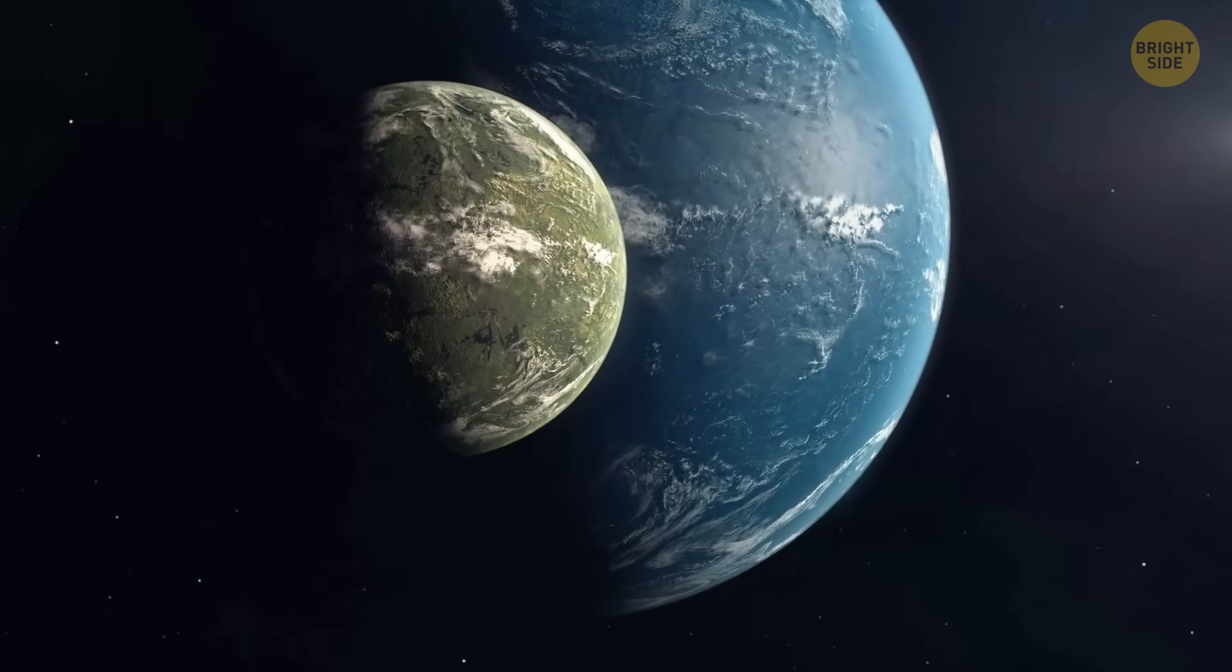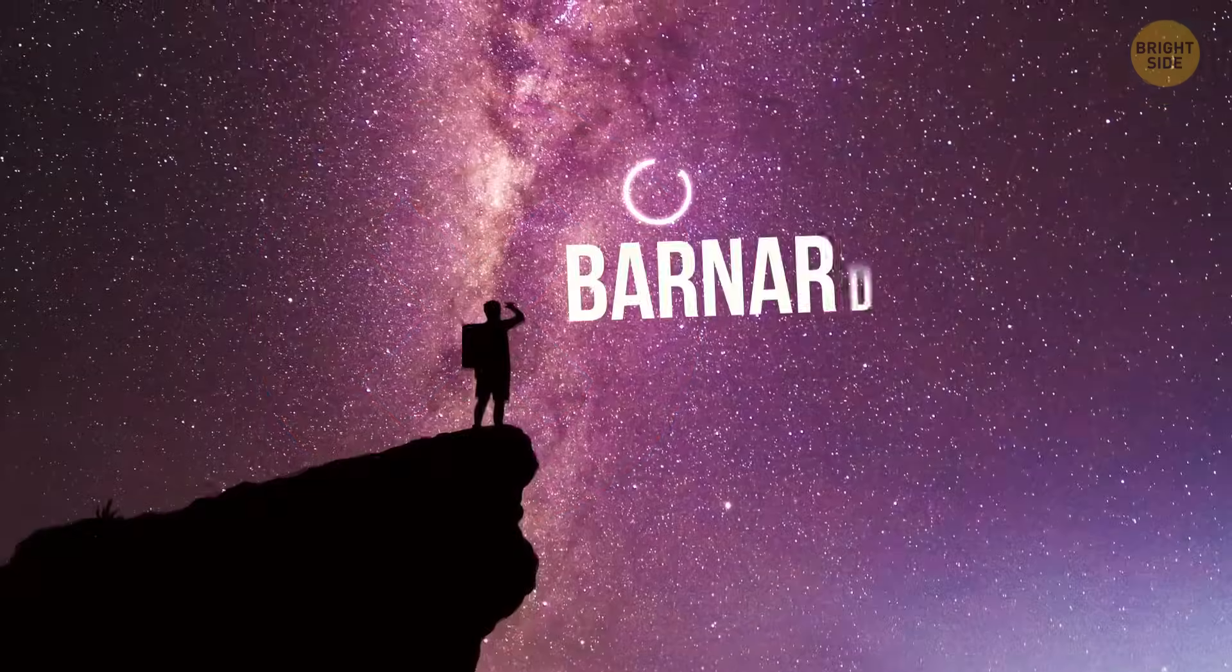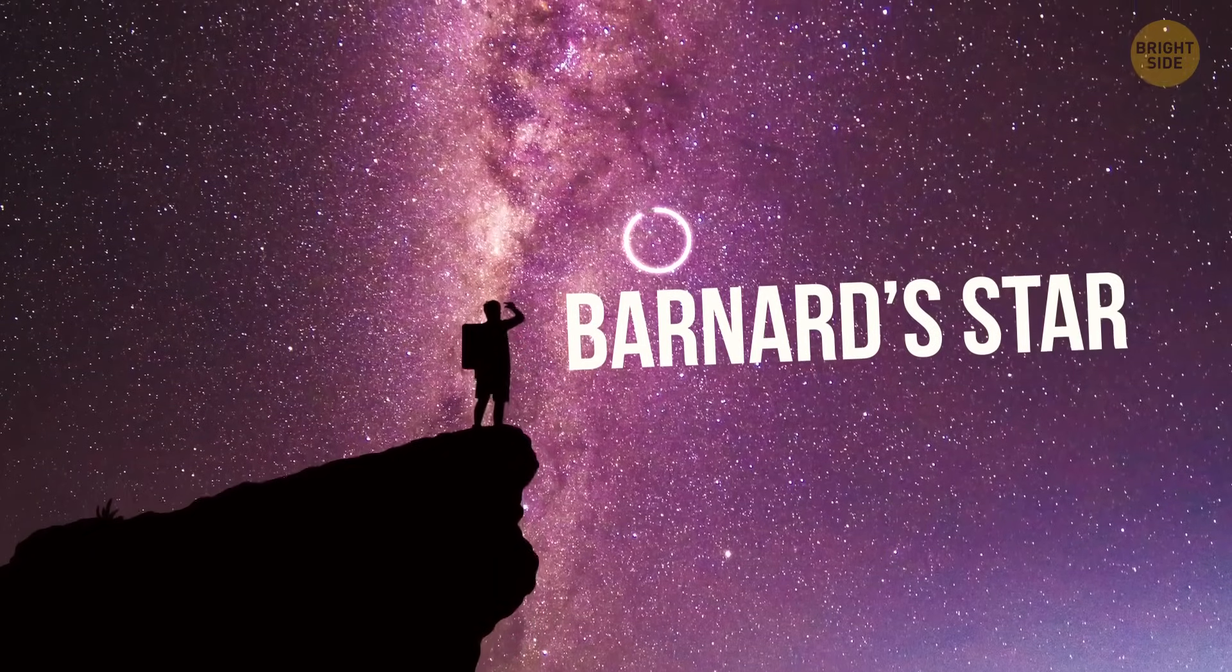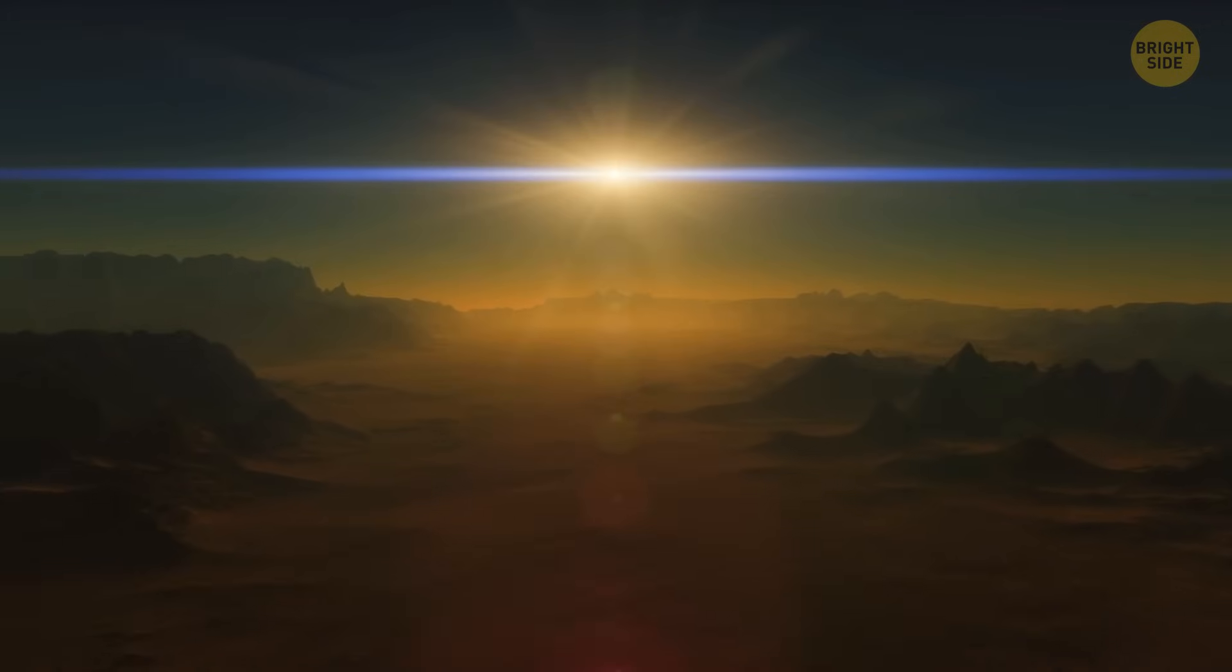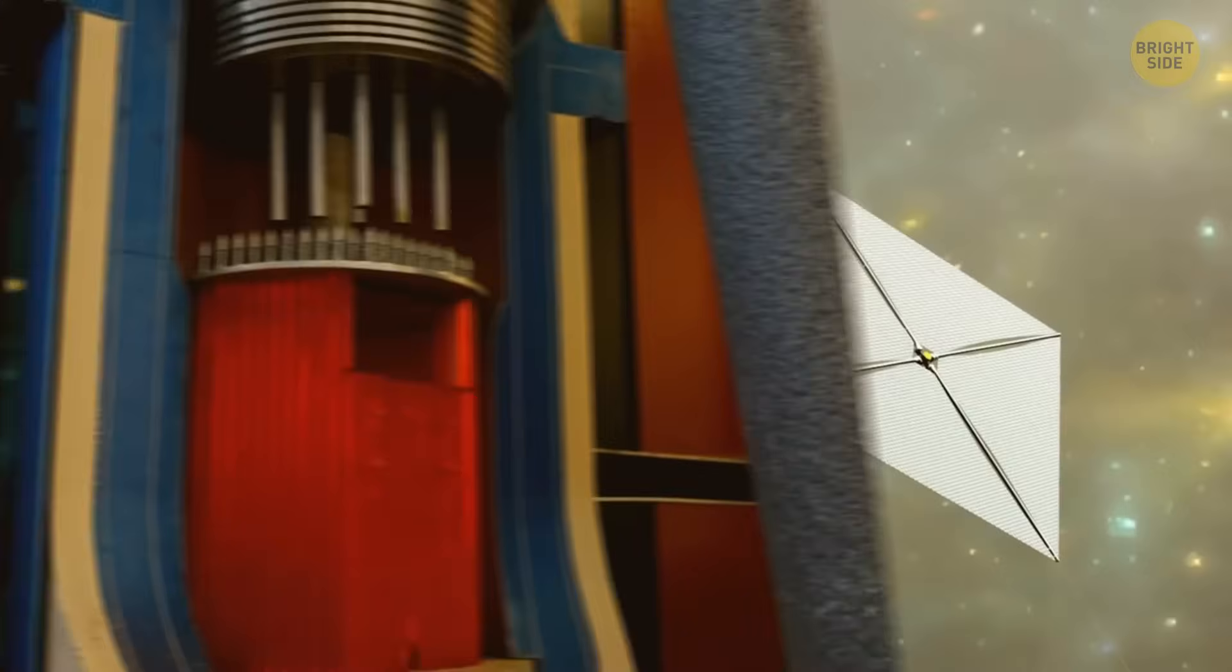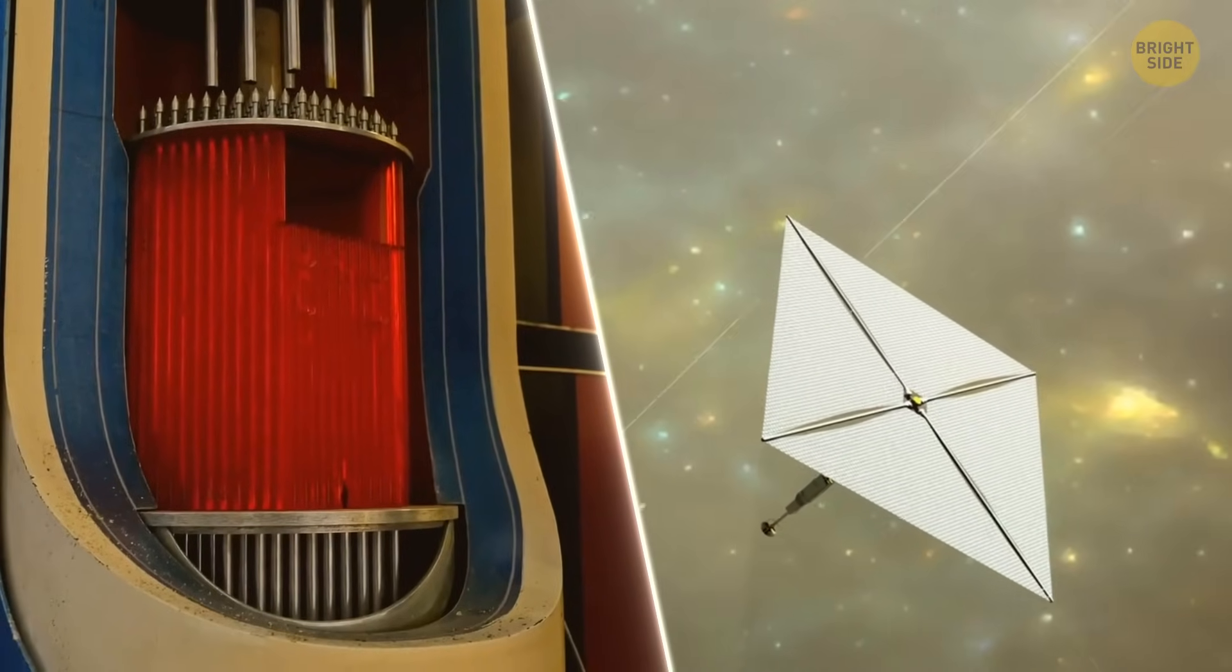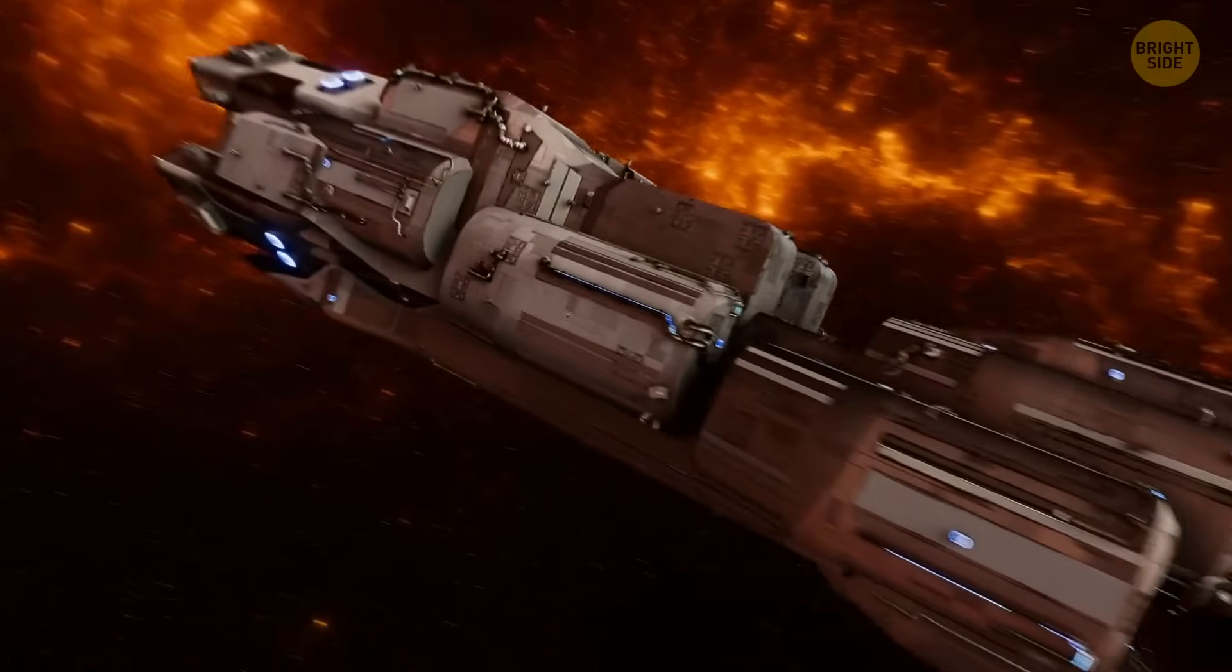So, there's no Earth 2.0 orbiting around Barnard's star. Still, it's an awesome find, especially since this star is basically our cosmic neighbor. Plus, the system might not stay off-limits forever. With nuclear fusion engines or light sails, futuristic propulsion systems that could make the trip way faster, we might probably go there one day.